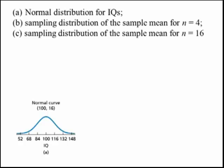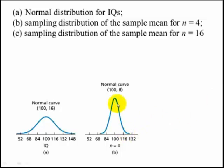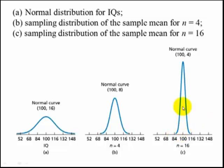The normal distribution for IQs is bell-shaped with a mean of 100 and a standard deviation of 16. Looking at the sampling distribution of sample means where N equals 4: it is still bell-shaped, its mean is still 100, but the standard deviation decreased from 16 to 8. For N equals 16: it is still bell-shaped with a mean of 100, but the standard deviation decreased further from 16 down to 4.